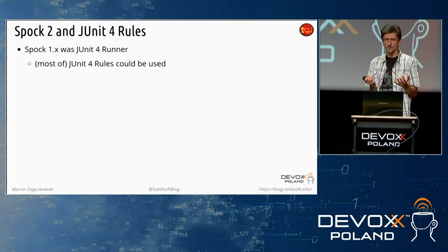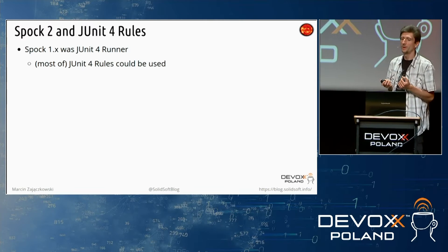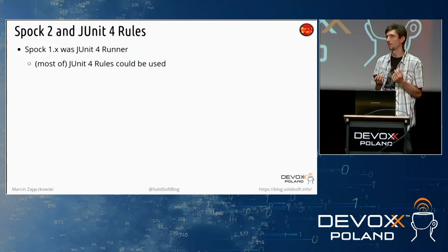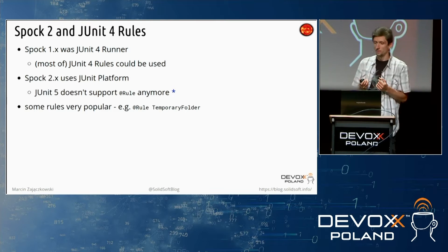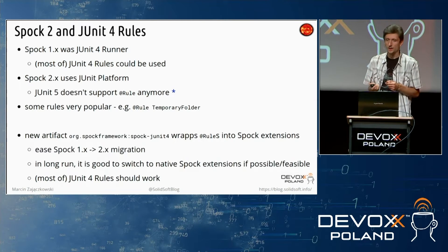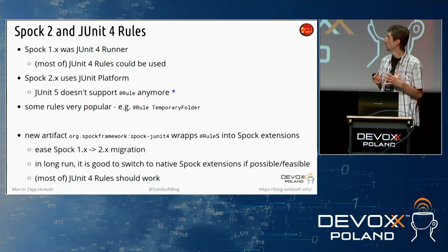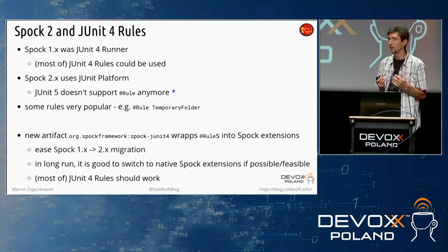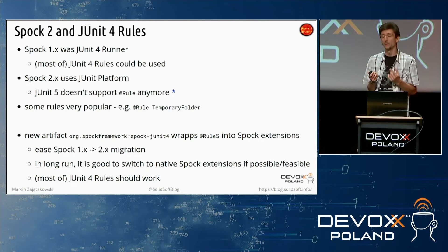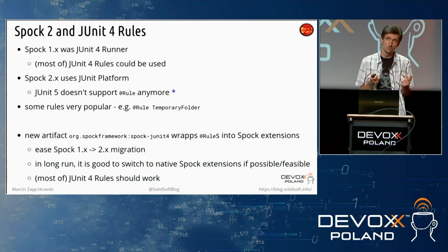You might say: I have a lot of JUnit rules in my project — what about them? Unfortunately, JUnit 5 no longer supports them officially. Some of them are very popular, such as temporary folder. However, the problem has been solved by the Spock developers. There is a dedicated Spock JUnit 4 module which internally wraps JUnit 4 rules into Spock extensions, making migration much more straightforward. However, it's still good to consider migration to native Spock extensions if possible and feasible.